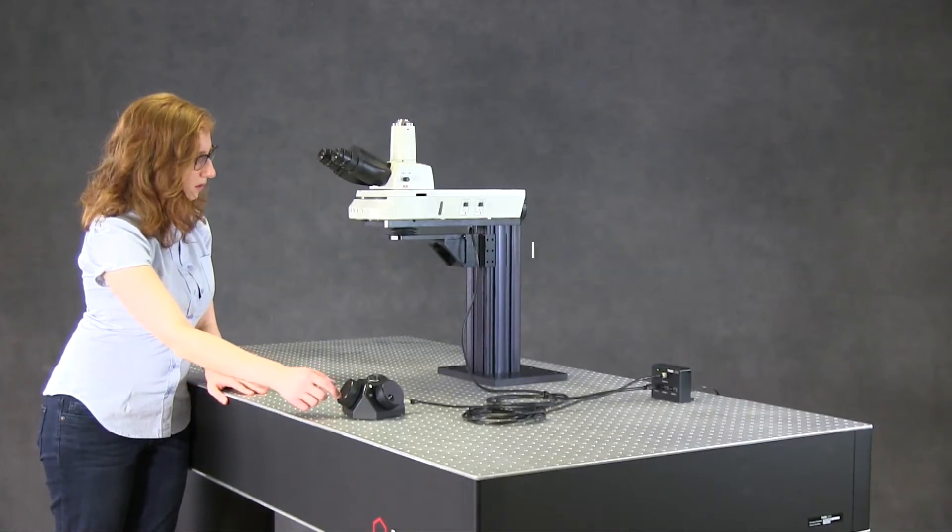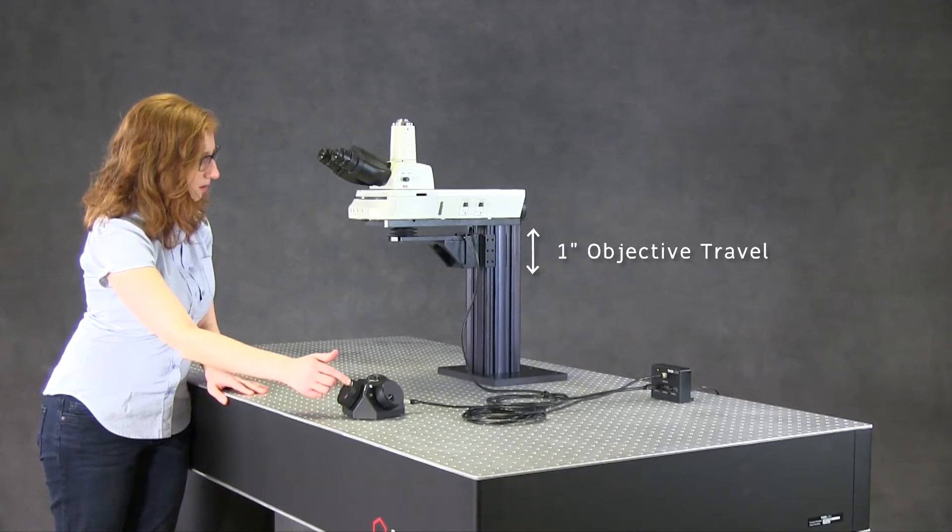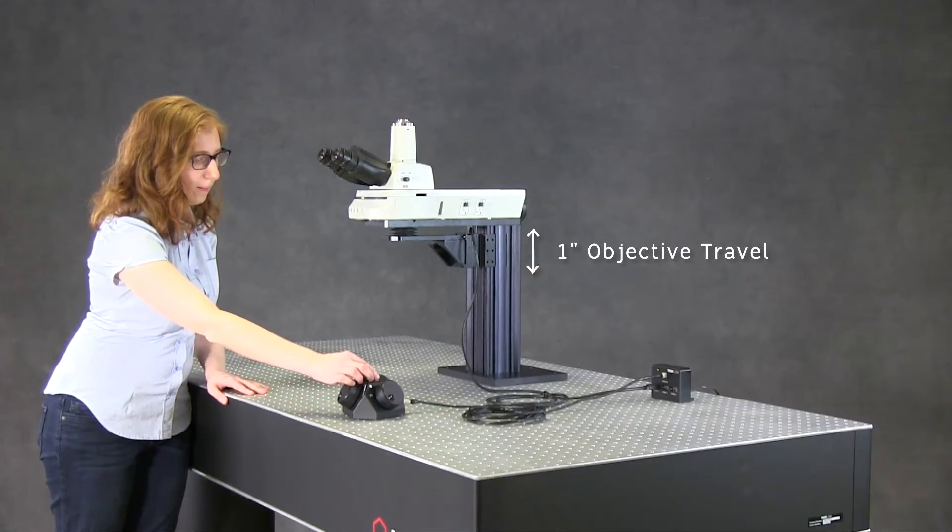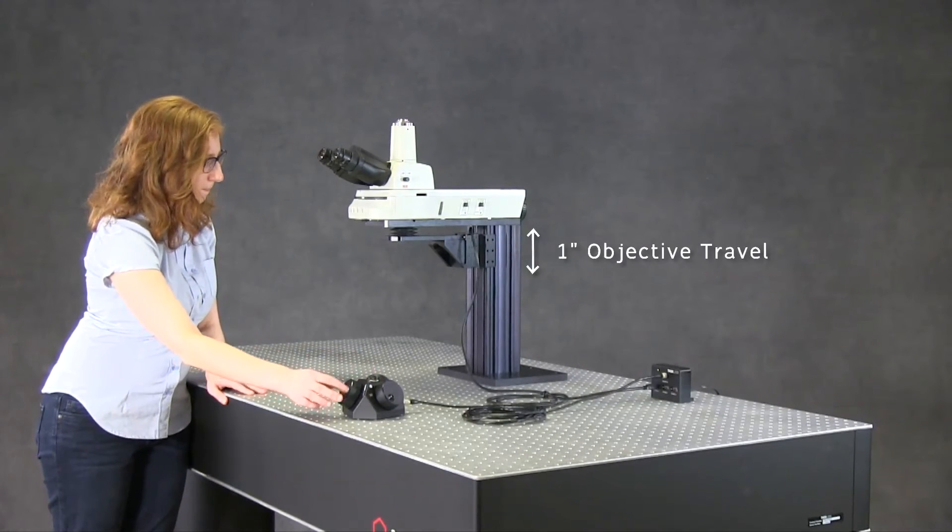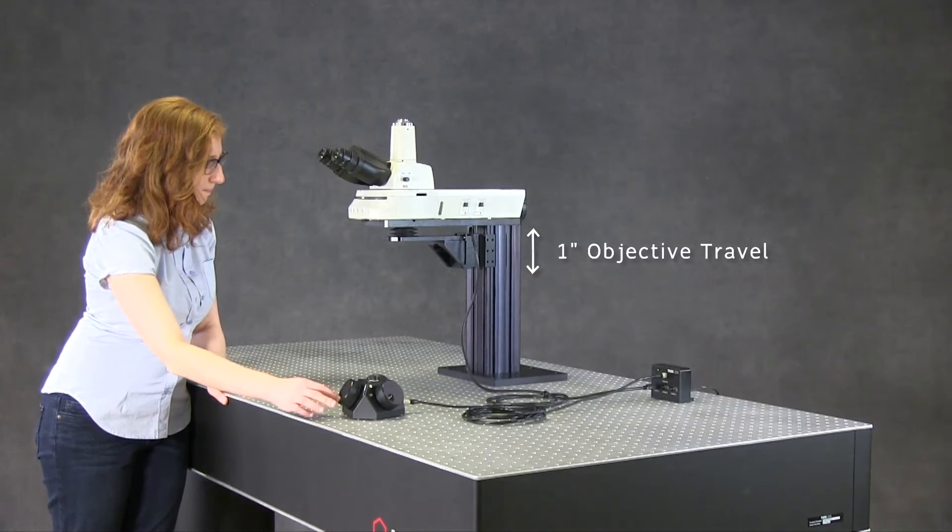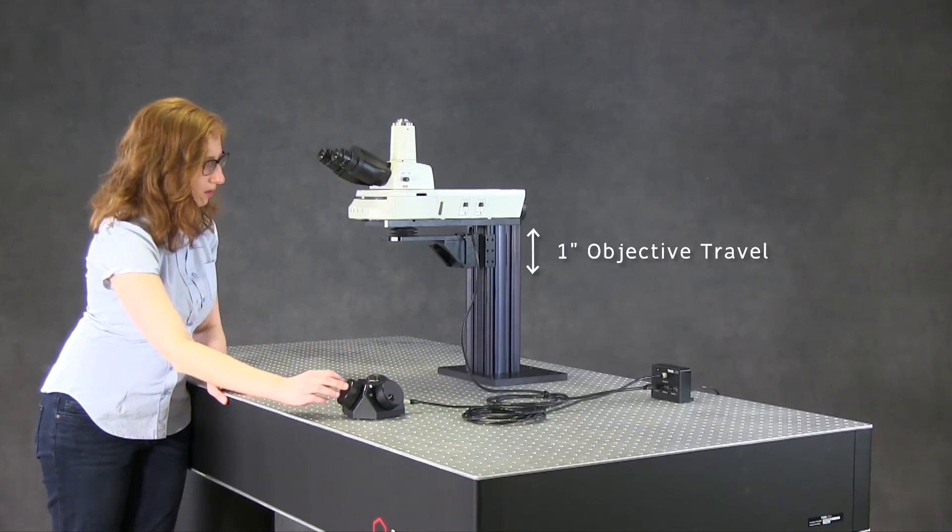The motorized objective holder provides 1 inch of z-travel. A knob on top of the controller adjusts the speed from fast, coarse movements to micro-stepping for fine focusing adjustments.